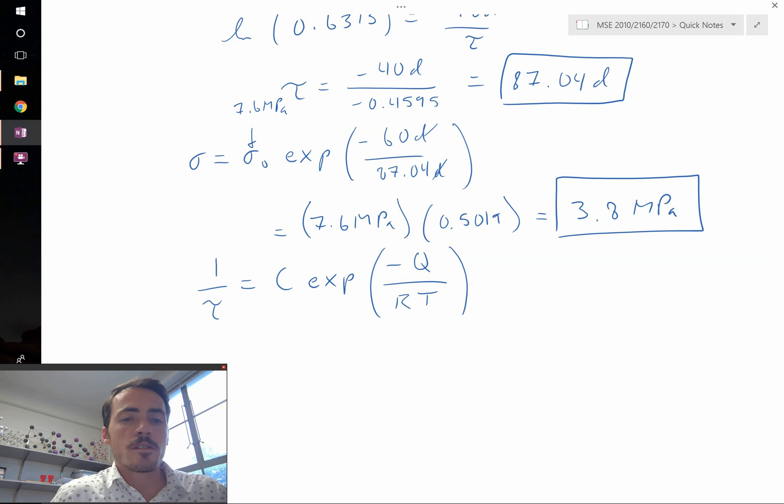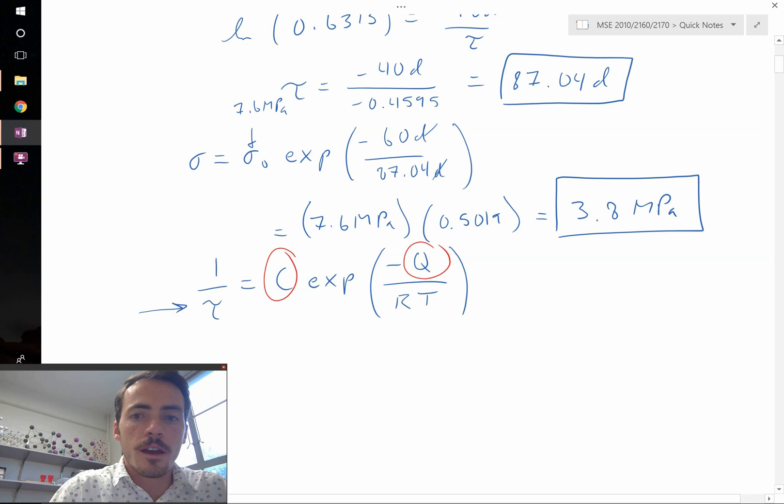So if we tried to solve this, we have two different temperatures where we know this time constant, and we know what temperatures those occur with, but we have two unknowns in this equation. We have both C and Q. Therefore, to solve this equation, we're going to need to write two equations since we have two unknowns. But we can do that. We know the time constant at two different temperatures. So let's go ahead and write out two equations with two unknowns, divide them by each other so that the C goes away, and then solve for Q.